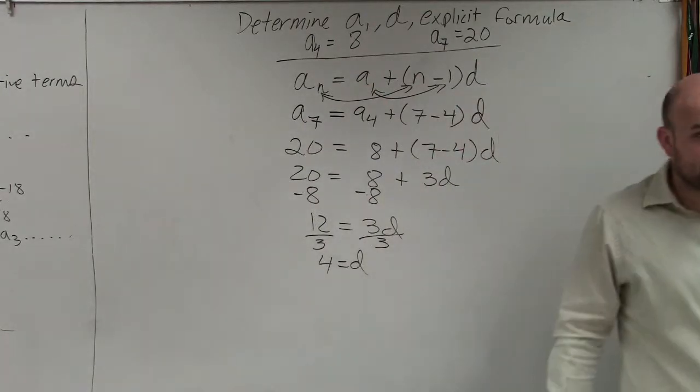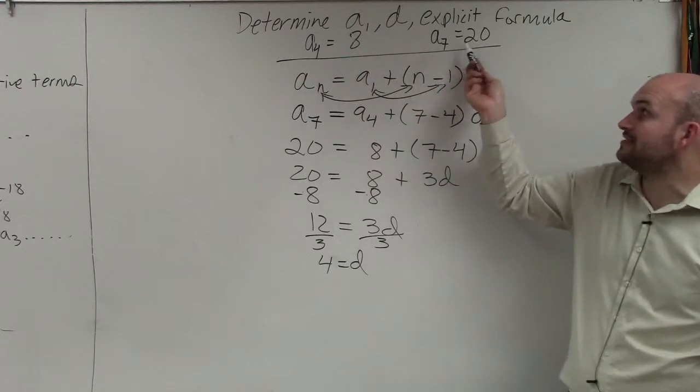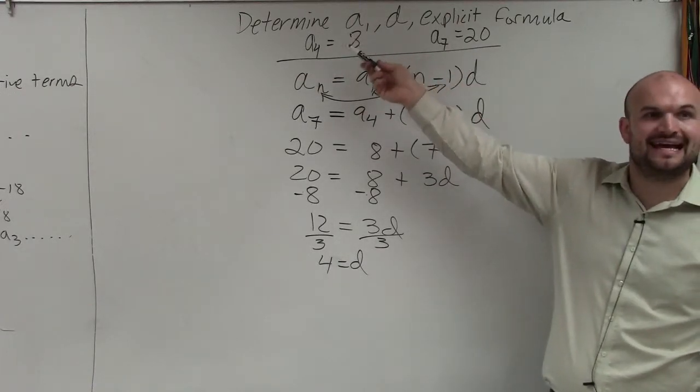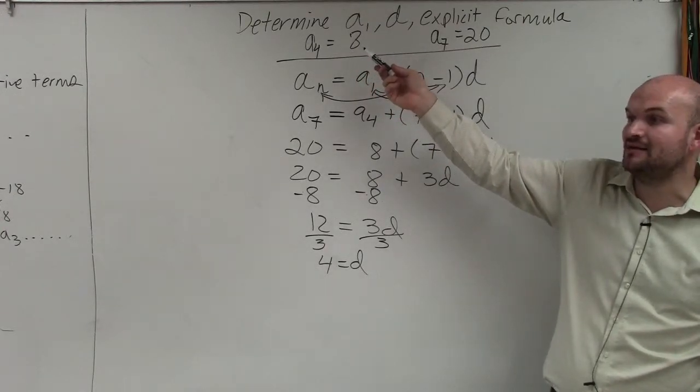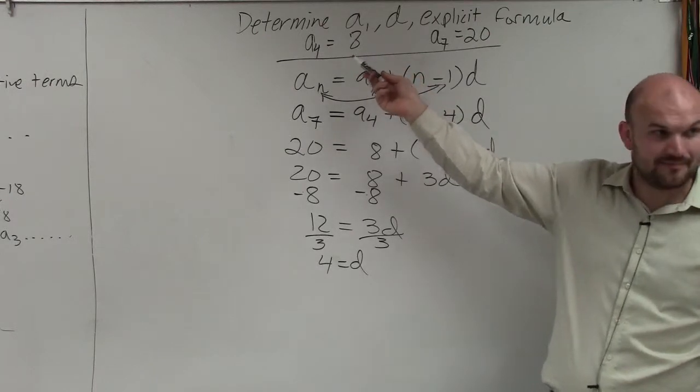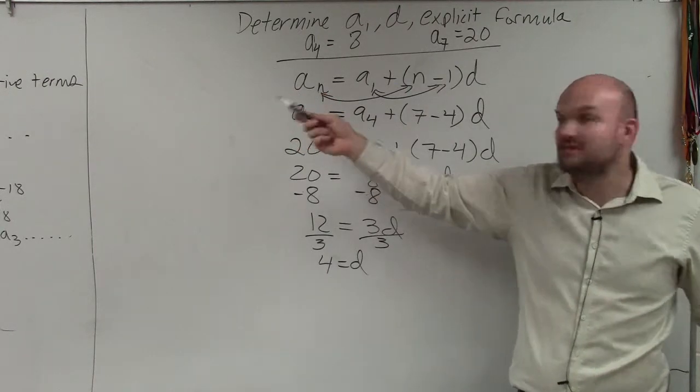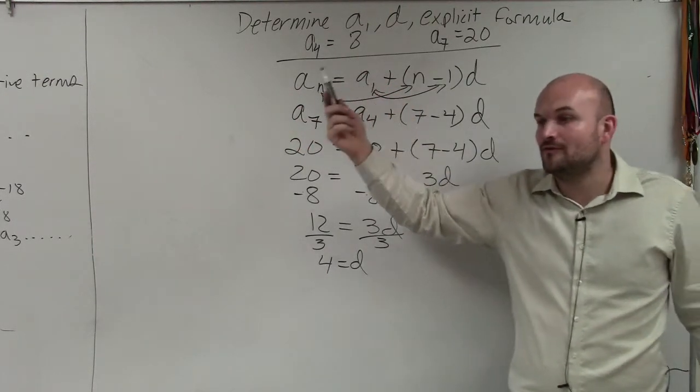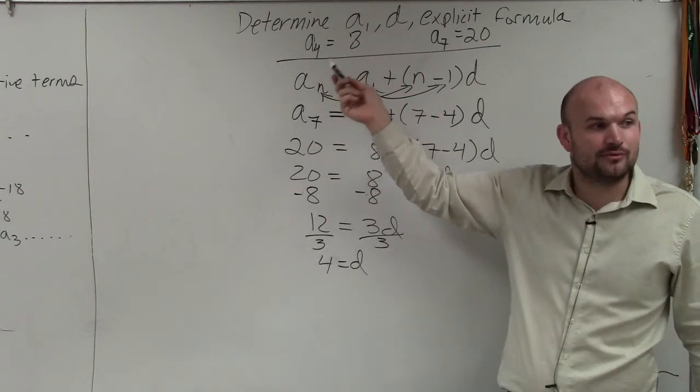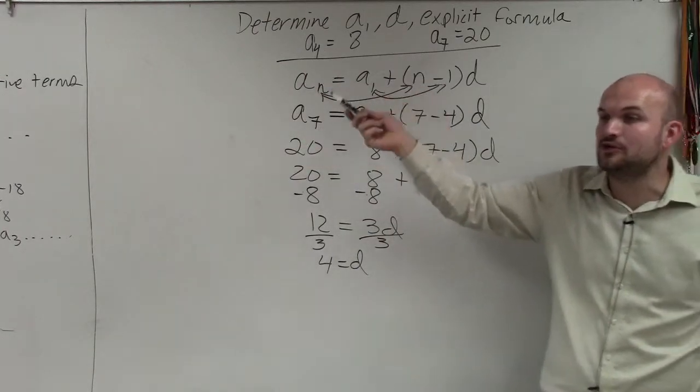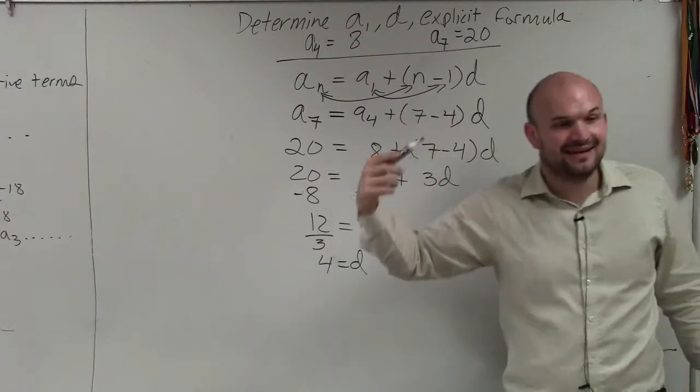Now, to find a of 1, we can do this in a couple different ways. The easiest way, guys, is do you guys see from a to the 4th to a to the 7th? All I'm doing is I'm adding 3, right? A to the 5th would be 11. A to the 6th would be 14, right? So could we also go backwards to find a to the 1? You would just subtract 3, right? So you could say a to the 3 is 4. Well, if a to the 4th is 8, a to the 3rd would be 5. a to the 2 would be 2. And a1 would be negative 1.